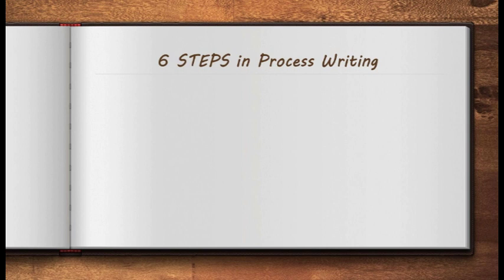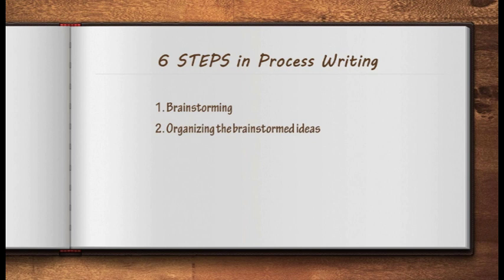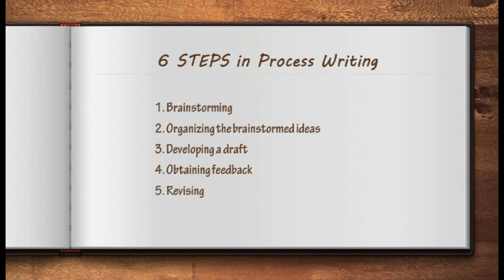Project-based learning is similar to process writing. In process writing, there are six steps. First is brainstorming — sharing ideas and opinions. Second is organizing the brainstormed ideas, collecting and organizing them to make it more systematic. Third is developing a draft, which helps you visualize it. Fourth is obtaining feedback to determine what needs to be improved. Fifth is revising, which may involve going back to earlier steps. Lastly, sixth is publishing — once everything is complete, that's the time to publish.